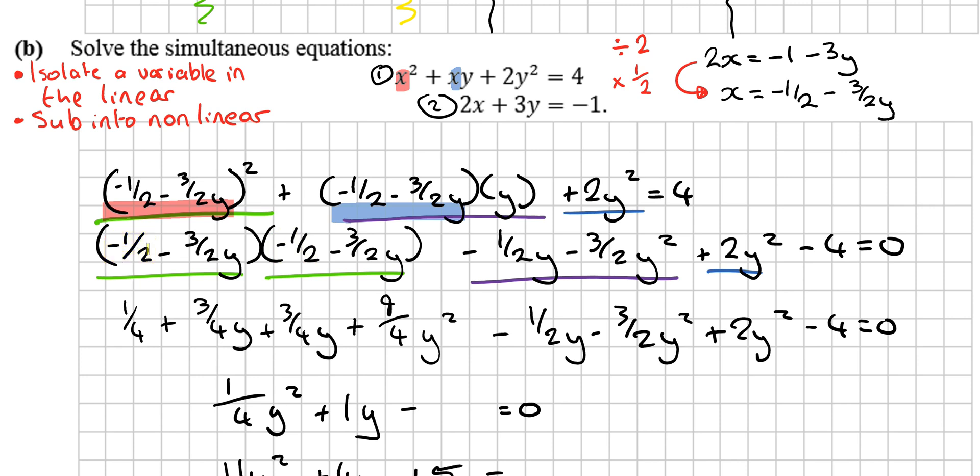Then minus by minus is plus. 1 over 2 by 3 over 2 is 3 over 4. Minus by minus is plus. 3 over 2 by 1 over 2 is 3 over 4. Minus by minus is plus. 3 over 2 by 3 over 2 is 9 over 4. y by y is y squared. Continue multiplying this out here. The y gets multiplied into the half. The y gets multiplied into the 3 over 2 y squared. And that stays constant.